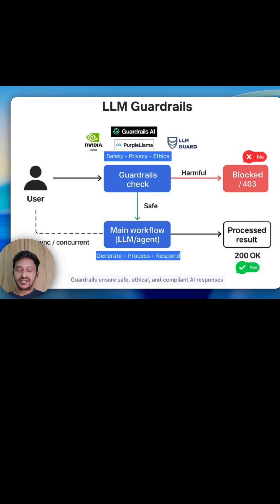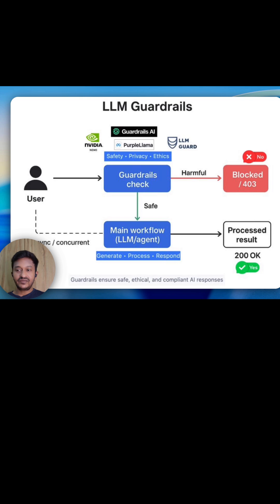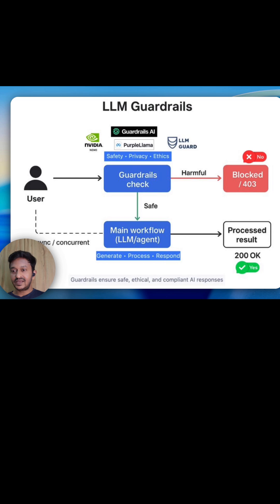The second scenario can be generating toxic content. What if the user starts using abusive language in a chatbot? Without guardrails, the AI might actually engage with that, and this can actually escalate.